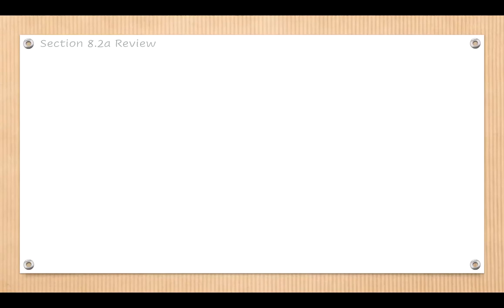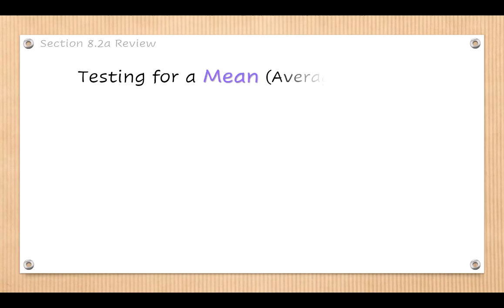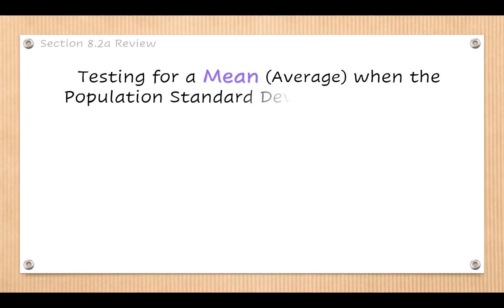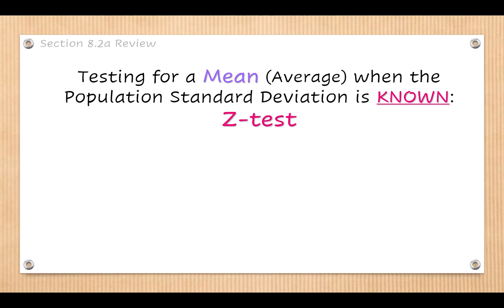Before we get into the new stuff for today, I just wanted to do a quick recap of the stuff that we went over in the first part of section 8.2. We started learning about how to do hypothesis testing for a mean — all of the questions we looked at dealt with means or averages. Specifically, we were looking at the cases where the population standard deviation is known, meaning they give it to you in the question. When the population standard deviation is known and you're testing for a mean, both of those things together tell you that you're going to use a z-test.